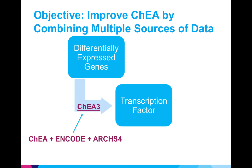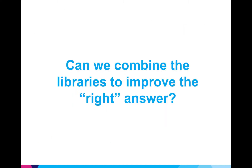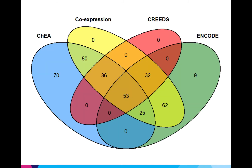My objective was to explore these questions and try to integrate multiple libraries into the CHEA enrichment analysis. We first have to find out whether we can even combine libraries in the first place. We can see in this Venn diagram that some transcription factors are found in more than one dataset. What if, given a transcription factor, its target gene lists across different libraries are completely different? Then combining libraries would decrease support for CHEA's transcription factor predictions instead of increasing it.